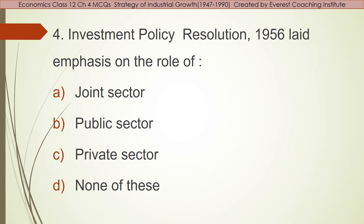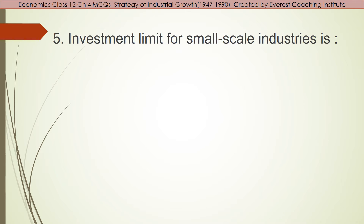Now come to question number four: Industrial Policy Resolution 1956 laid emphasis on the role of — joint sector, public sector, private sector, or none of these. In 1956, the emphasis was on the public sector because private sectors did not have sufficient capital — only a couple of large groups had money. So the IPR 1956 was designed to promote and give importance to the public sector for development. The answer is option B — public sector.